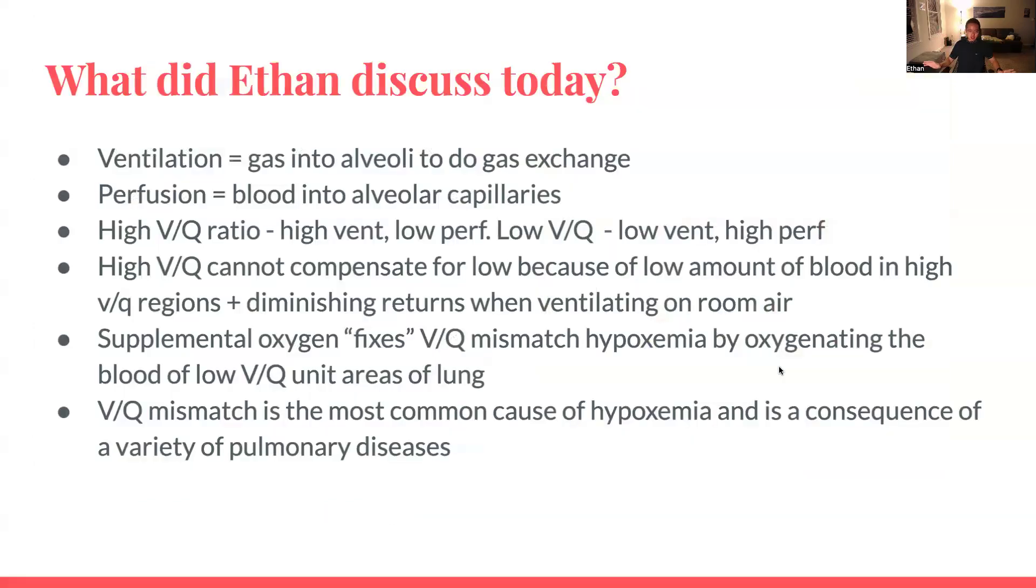So what I talked about today, a lot of stuff. First ventilation, it's just the ability to get gas in the alveoli to do gas exchange. Then perfusion, get blood in those alveolar capillaries. Both are required to really get oxygen in and carbon dioxide out. High V/Q ratio is high ventilation, low perfusion, while low V/Q ratio is low ventilation, high perfusion. High V/Q unit areas cannot compensate for low V/Q unit areas because there's a smaller amount of blood in those high V/Q unit regions. And there's diminishing returns when you're ventilating on room air. You can't pump up the oxygen a ton in high V/Q unit areas, but you can drop the oxygen a ton due to poor ventilation in those low V/Q unit areas. Supplemental oxygen helps fix the hypoxemia caused by V/Q mismatch by oxygenating the blood of low V/Q unit areas of lung. There's such a strong diffusion driving force when you're pumping in pure oxygen, even if there is some kind of ventilation defect in these regions of lung. And lastly, V/Q mismatch is the most common cause of hypoxemia and is a consequence of a variety of pulmonary diseases.